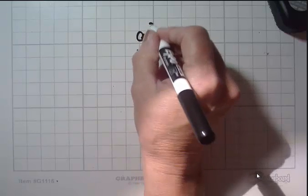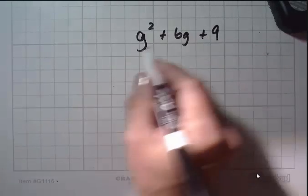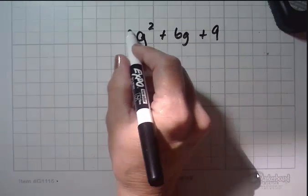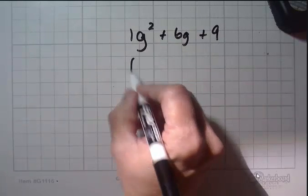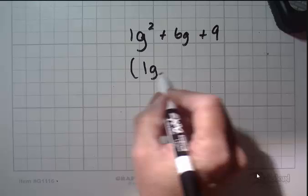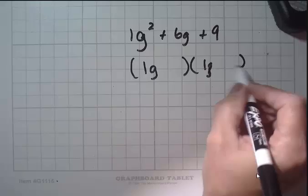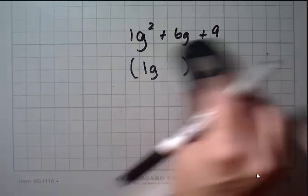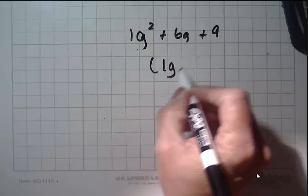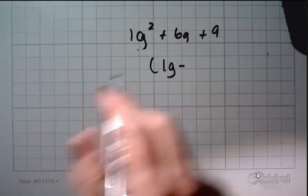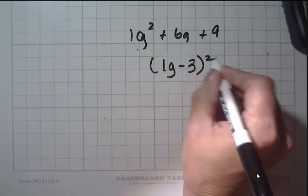Here's another one. G squared plus 6g plus 9. Did you recognize that invisible 1 here is a perfect square? Did you recognize that 9 is a perfect square? Square root of 1 times g. Square root of 1 times g. Try that again. Square root of 1 times g minus the square root of 9 which is 3. And that whole thing is squared. And you're done.